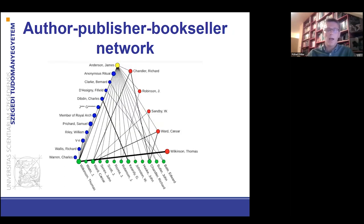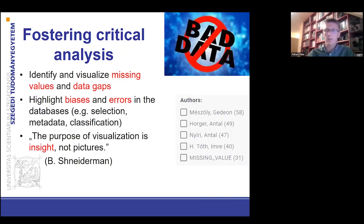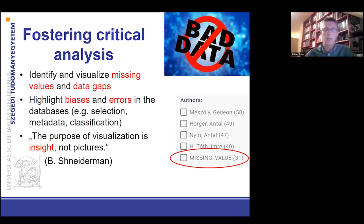You can also visualize a sub-network of this database. The critical analysis function identifies and visualizes missing values and data gaps of the uploaded databases. Under the author field, you can see the missing value. Users cannot ignore the missing values when it comes to analysis and interpretation of the results. It also highlights biases and errors in the databases, whether they are selection, metadata or classification biases.